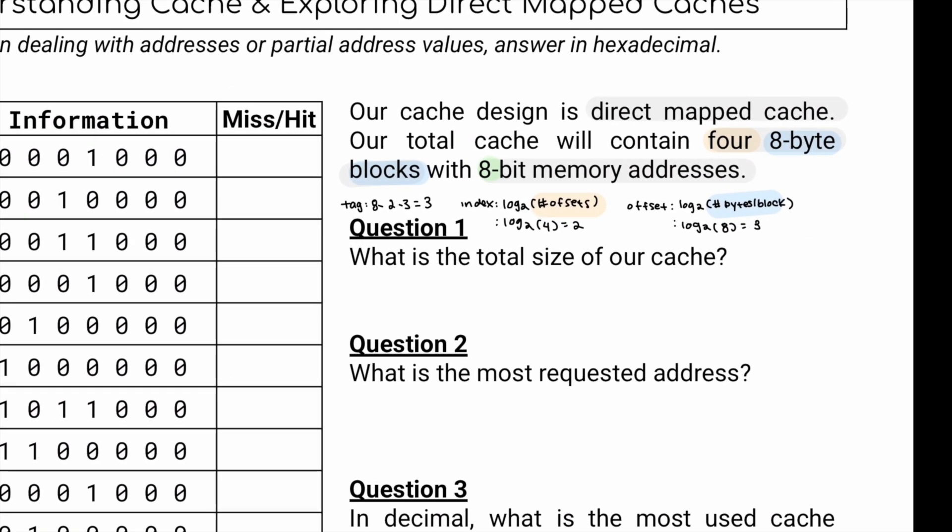So our first question is what is the total size of our cache? The total size of our cache is just going to be adding the sizes of each of our blocks within our cache. So we know we have four total blocks and each one of them is 8 bytes. So we're just going to multiply 8 by 4, which equals 32 bytes total.